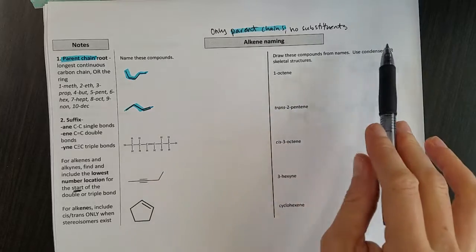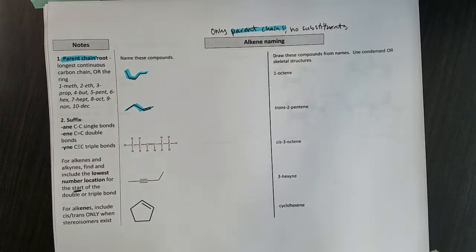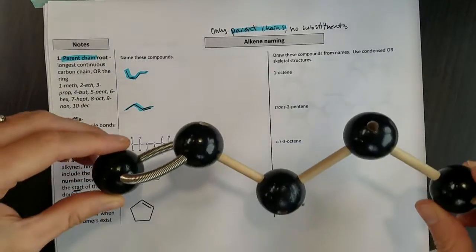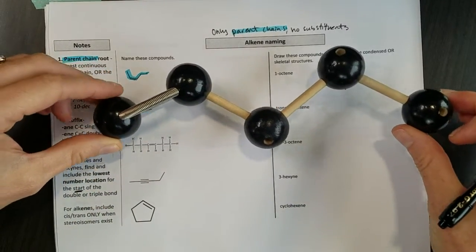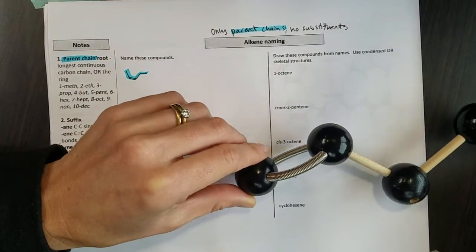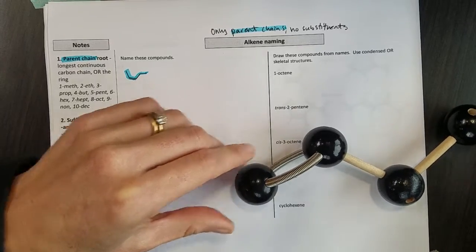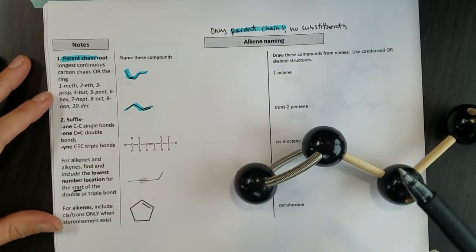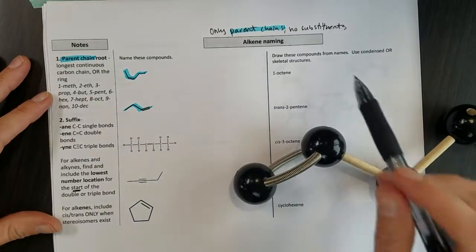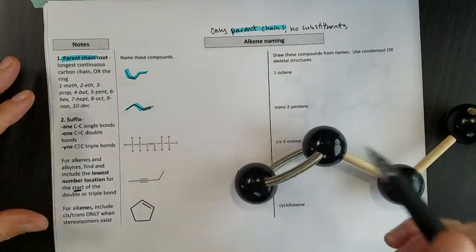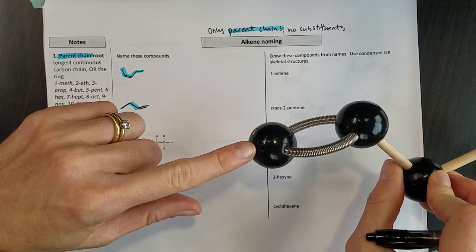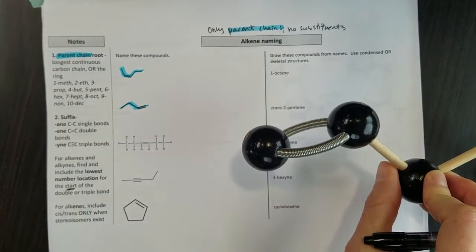So let's start with 1-octene. You can use condensed or skeletal structures. I'm going to stick with condensed for now just because it's easier than drawing C's and H's. Here I didn't add enough carbons on because I don't have enough atoms here at home, but we'll just pretend this is the front end of 1-octene. When I look at this, the parent chain oct tells me how many carbons? Eight, right? And then -ene tells me I've got a double bond. And where do I put that double bond? Well it's going to start at the first carbon. So this is carbon one and between one and two will be my double bond.